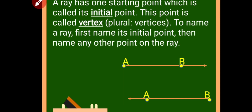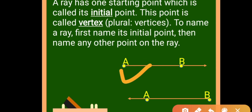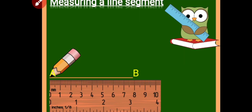Is ray AB the same as ray BA? No, both rays are not the same. Why? Because their initial points are different — that is why they are not the same.